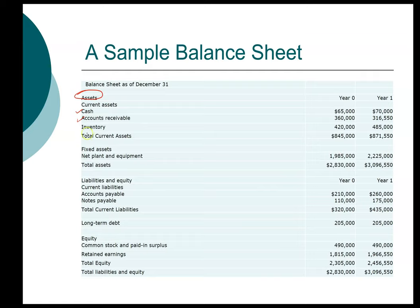Next is inventory. Inventory is goods that you have on the shelf but you haven't sold them yet, so it will take a little bit longer. Next will be fixed assets — this may be buildings or equipment — that will take longer to liquidate. In these simple financial statements, we don't have any intangible assets.